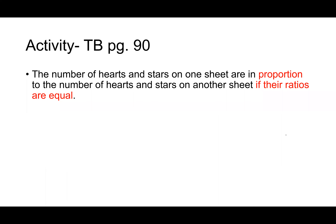Next definition: the number of hearts and stars on one sheet are in proportion to the number of hearts and stars on another sheet if their ratios are equal. So you have two colored sheets whose ratios are equal — they are in proportion, even though they have different numbers. Which two sheets have equal ratios?